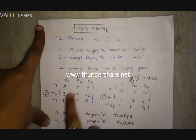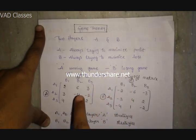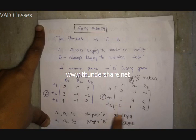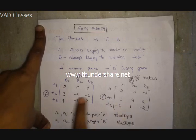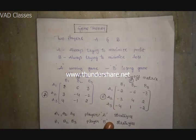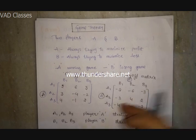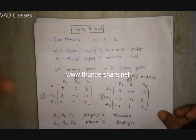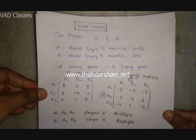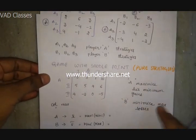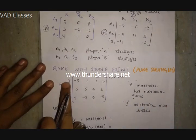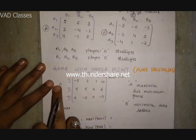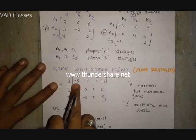Both players will have an optimal strategy: player A maximizes his benefits or profits, and player B tries to minimize his losses. This may not be a square matrix — there is no such necessity. Suppose A has four strategies and B has three strategies, or A has two strategies and B has four strategies.